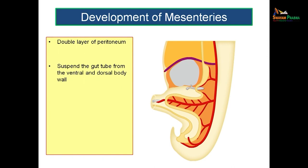The double layer of peritoneum suspends all these gut tubes from both the dorsal and ventral aspects. It is through the mesentery that blood vessels and lymphatics are able to reach these organs, as all these blood vessels and lymphatics need some tissue to move through.